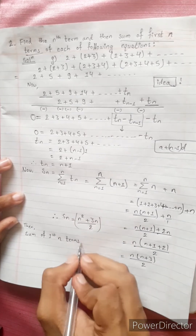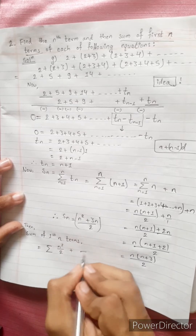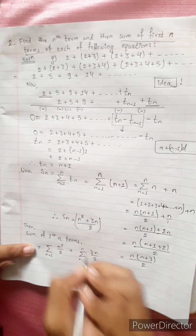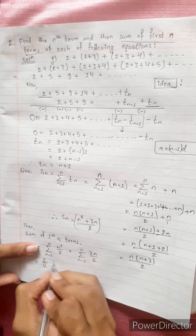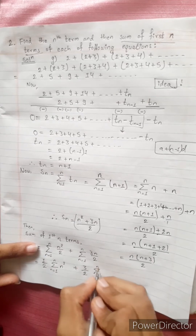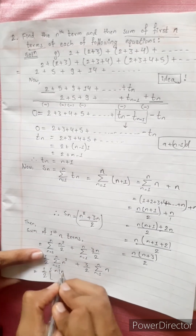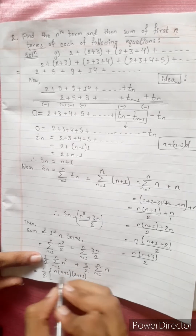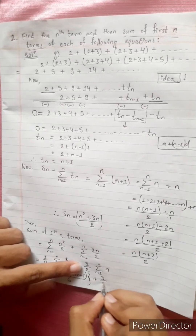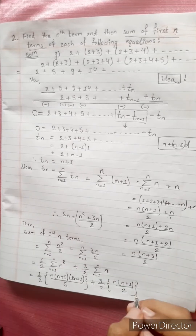Now for the sum of the first n terms, we expand: S_n equals summation of (n² plus 3n)/2, which we separate into (1/2) times summation of n², plus (3/2) times summation of n, from n equals 1 to n.